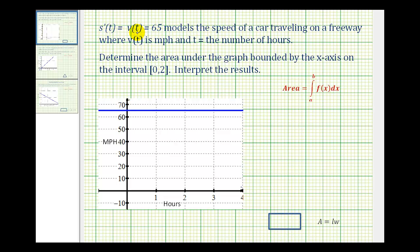s'(t) = v(t) = 65, which means the derivative of the position function equals the velocity function, which equals 65. This models the speed of a car traveling on a freeway where v(t) is in miles per hour and t is the number of hours.